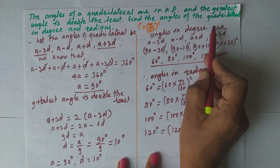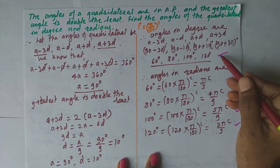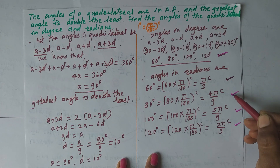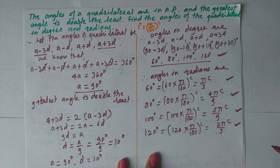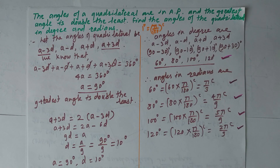We have found all the angles in degree and radians. If you know the properties of arithmetic progression, it is very easy to solve such problems. See you in the next lecture — till then, goodbye!